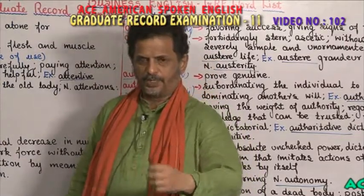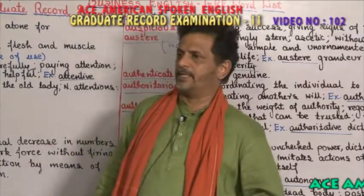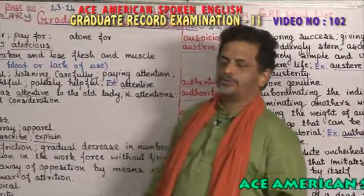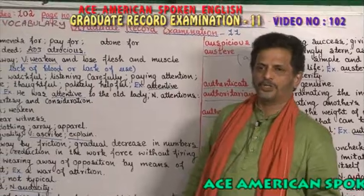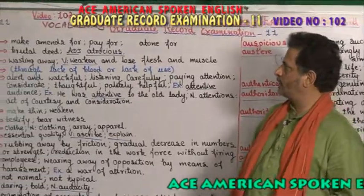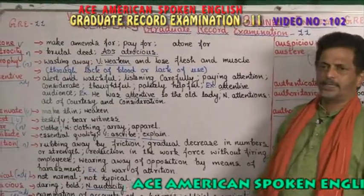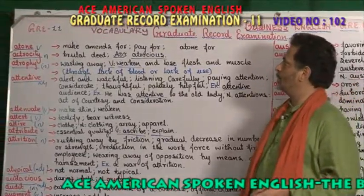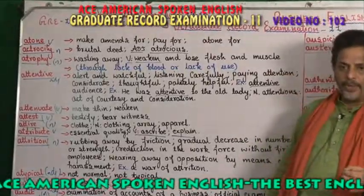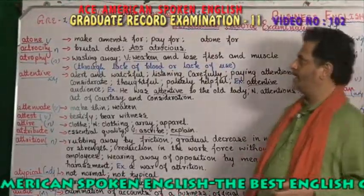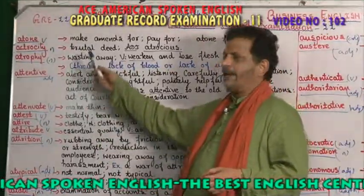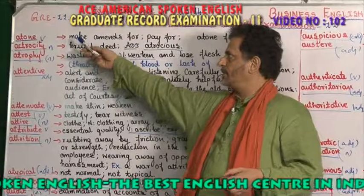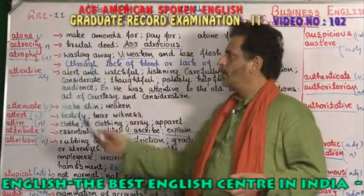Welcome to ASM American English Center. We are taking a Graduate Record Examination book — this is video one or two, on page numbers 13 and 14. The vocabulary word is 'atone' — it is a verb.